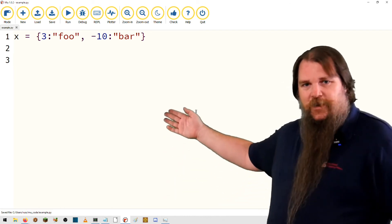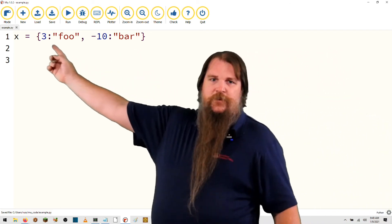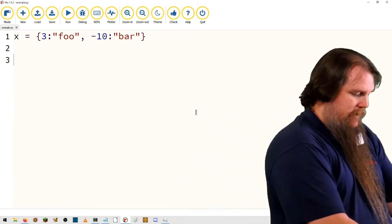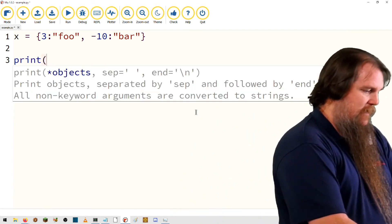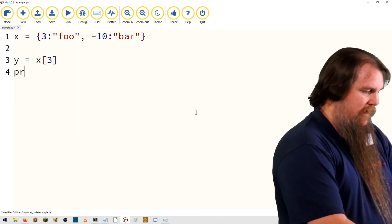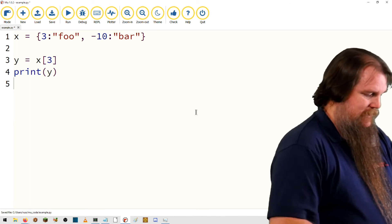All right, so I've written here, x equals 3 colon foo, negative 10 colon bar. Can we print, let's actually do first, let's say y equals x[3], and then we'll print y. Let's see what happens.